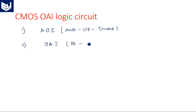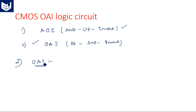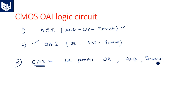We have already done AND-OR-INVERT in the previous video. Now we are going to see OR-AND-INVERT. OR-AND-INVERT means first we perform OR operation among a few inputs, then we perform AND operation between the resultant bits, and then we perform the inverting operation. The output is always a complemented form in CMOS logic circuit design. If you do not want the complemented form, you have to add one more inverter at the output.